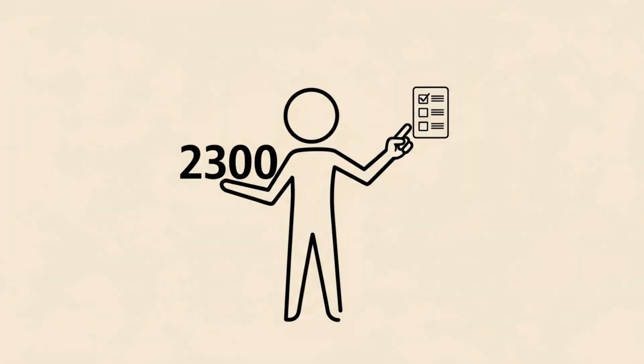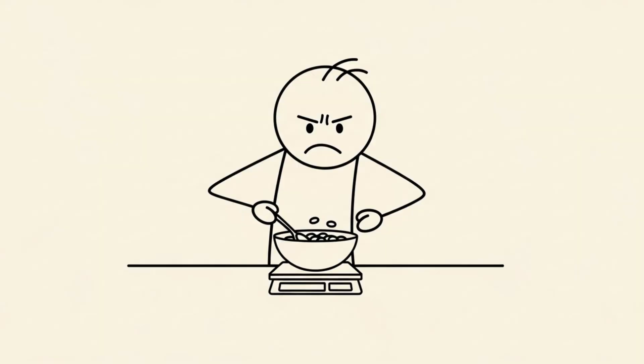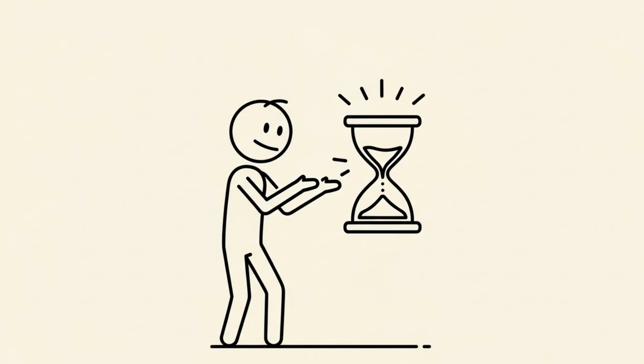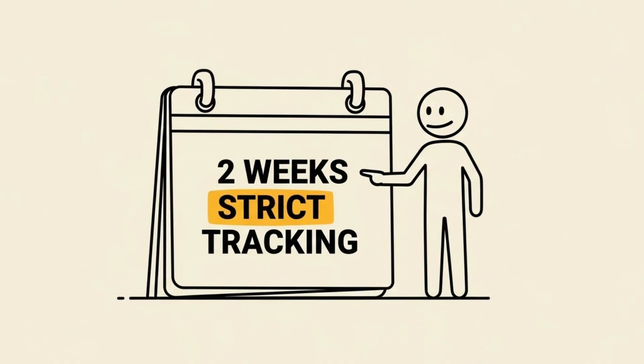Once you have your number, you have to track it. I know, tracking food is annoying. Nobody wants to be the person weighing their cereal. But you don't have to do it forever. Treat it like a financial audit. Do it strictly for 2 weeks.